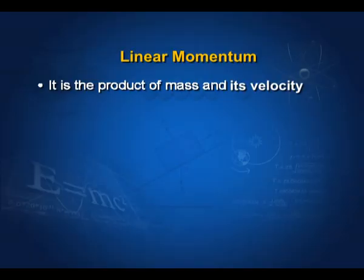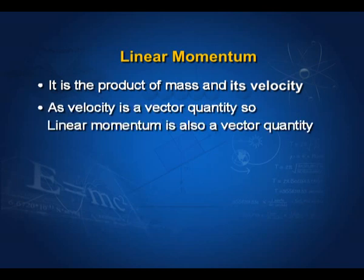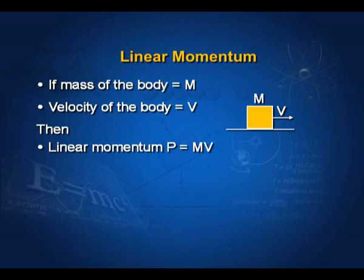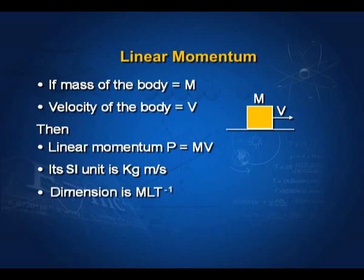Now we will study linear momentum. It is the product of mass and velocity. Since velocity is a vector quantity, linear momentum is also a vector quantity. If an object has mass m and is moving with velocity v, then linear momentum is represented by the symbol P, so P equals m into v. Its SI unit is kilogram meter per second and the dimension is MLT⁻¹.